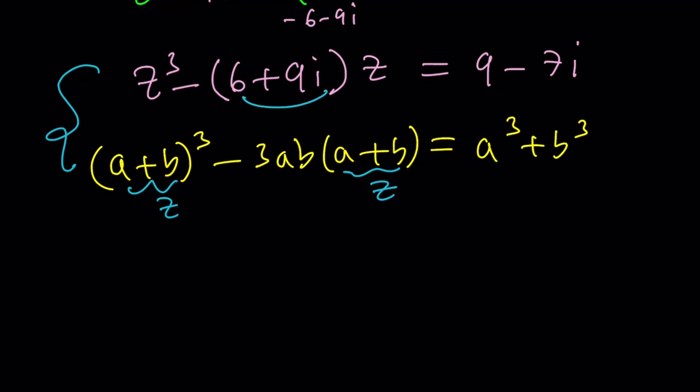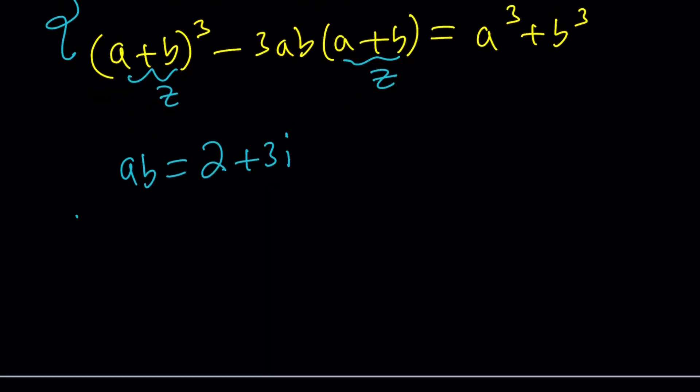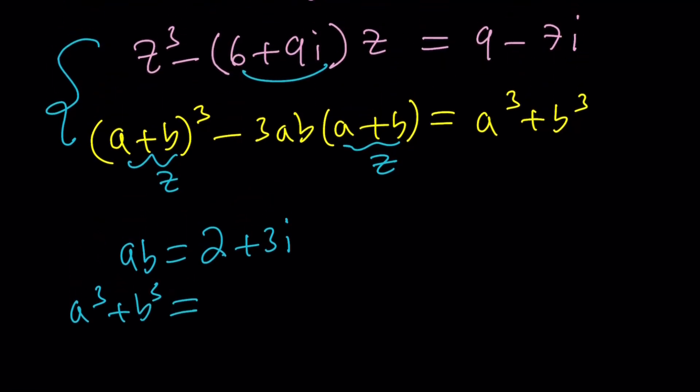Notice that this is the same as 3ab. So ab is going to be that divided by 3, which is 2+3i. Conveniently, everything is a multiple of 3. And then a³+b³ is just going to be 9-7i.